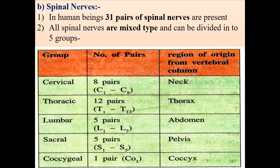To summarize: spinal nerves arise from the spinal cord. They are formed by the dorsal sensory root and the ventral motor root. When these are fused, they form mixed type nerves, so all spinal nerves are mixed in nature. They are divided into five groups according to the region of the body.